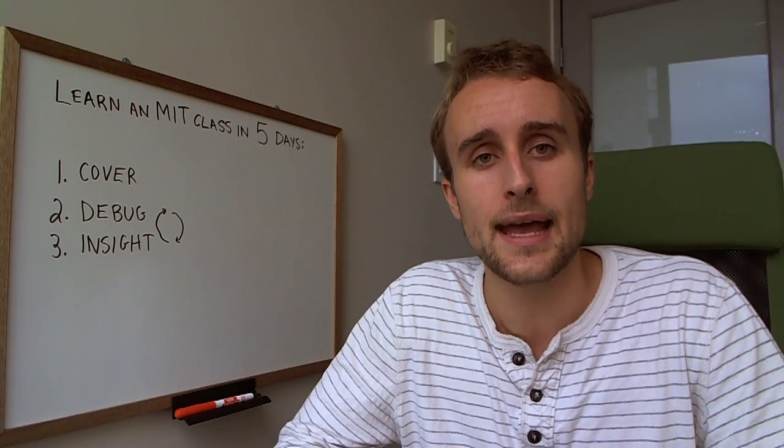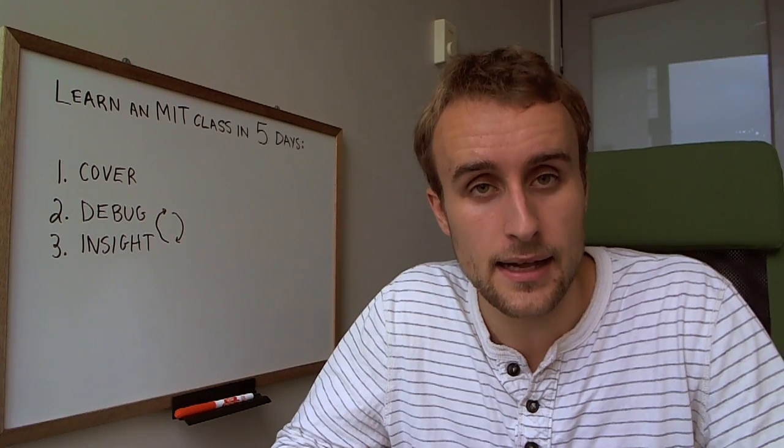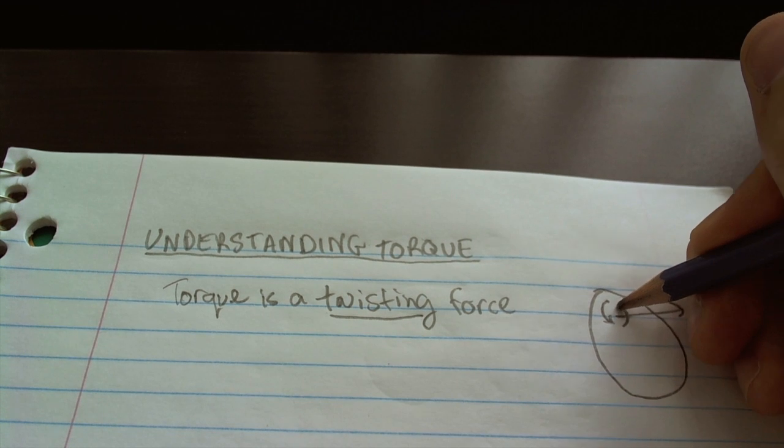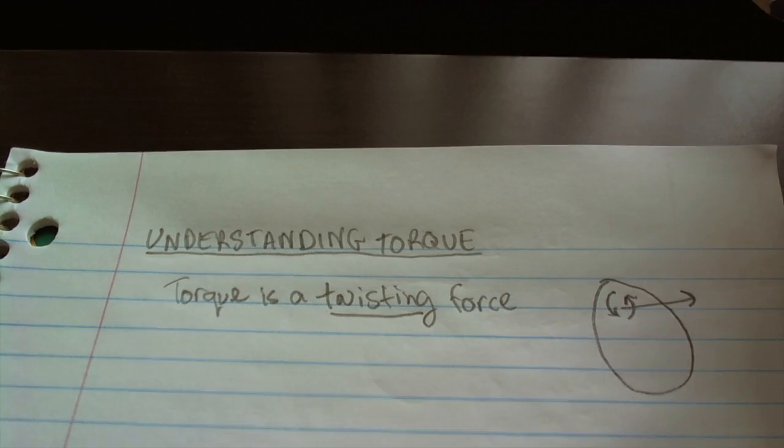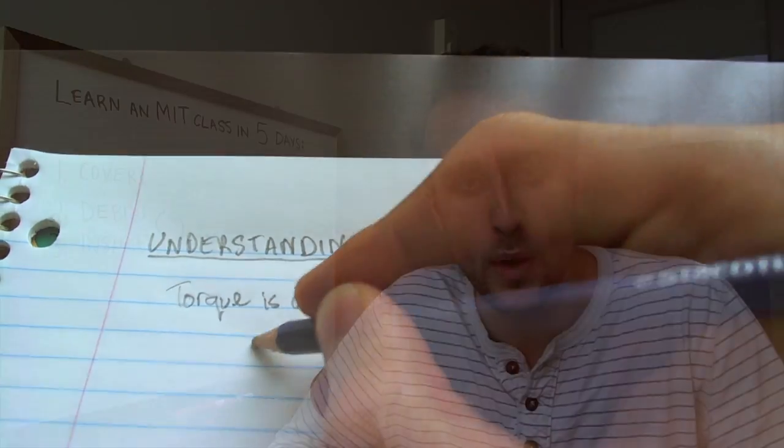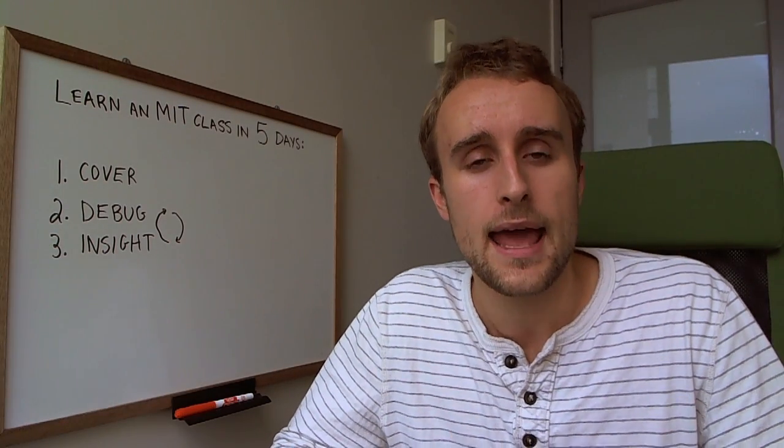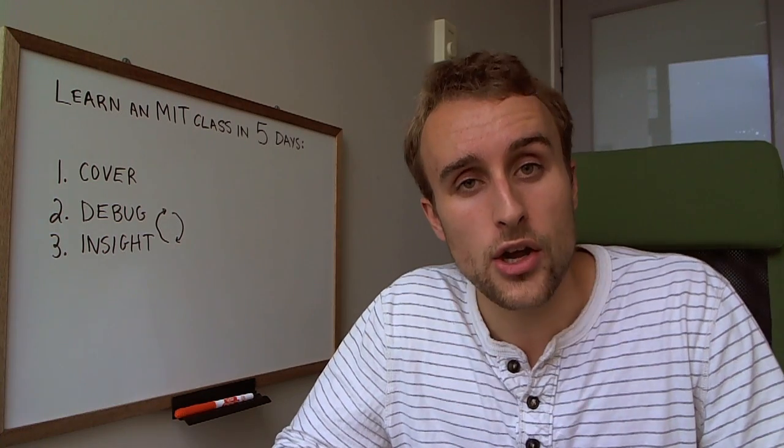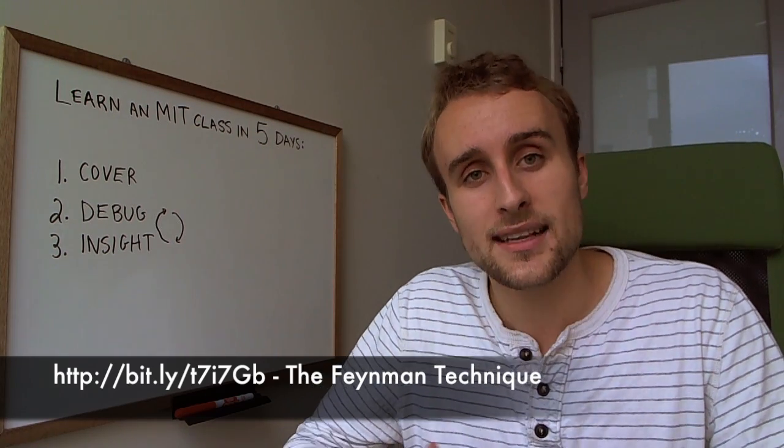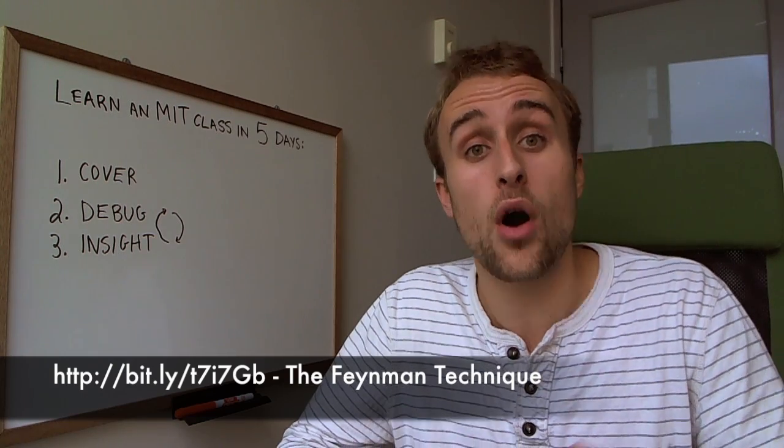So the first technique I've been using is what I call the Feynman technique. And this is because, I call it this because Richard Feynman, the Nobel laureate physicist, he had a similar kind of method for going through papers and for thinking through ideas which I sort of adopted in my own practice. And I have a link here to the video where I describe this technique and there's also in the notes below a link to lecture notes where there's tons of examples of how I use this on the last class I did which was electricity magnetism.